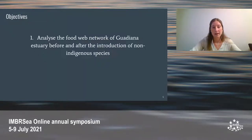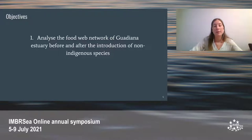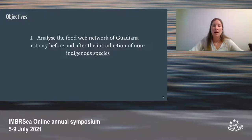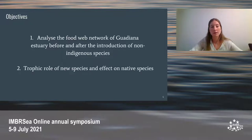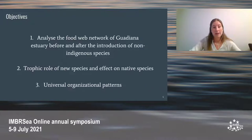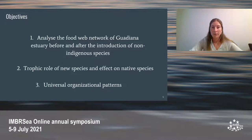The main objectives of this study are: first, to analyze the food web network of the Guadiana estuary for the first time before and after the introduction of non-indigenous species to see how they are affecting the ecosystem by comparing the properties. Second, to understand the trophic role of these new species to see how they affect the native species. Third, this study will contribute to the exploration of universal organizational patterns of complex food web networks through a comparison with ecosystems previously analyzed.